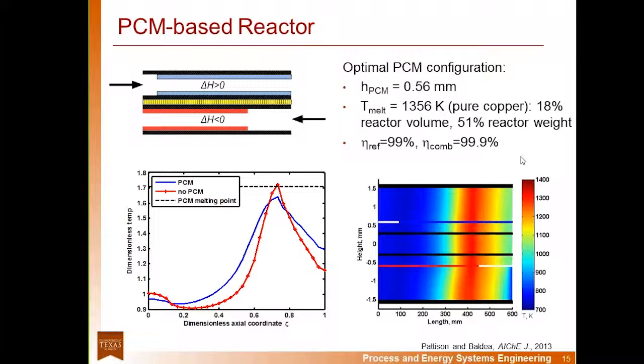We used a modified approach where we simulated the reactor while implementing a pseudo-random time-varying disturbance signal that represented an unfolded probability distribution. We implemented a copper phase change material because the melting point is higher than the nominal maximum temperature and within safe operating limits, so it had the appropriate melting properties. And so the optimization calculated a thickness of 0.56 millimeters, which contributes 18% to the reactor volume and 51% to the reactor weight. Because the phase change material was selected as a metal with high thermal conductivity, pure copper, the heat is better distributed along the reactor length, resulting in several steady-state benefits.